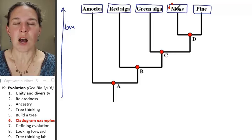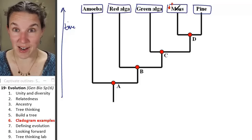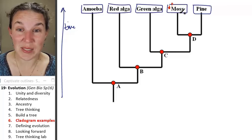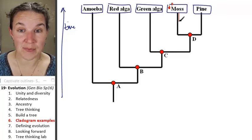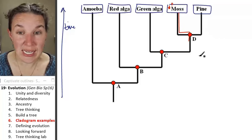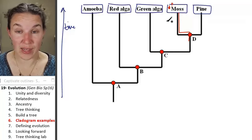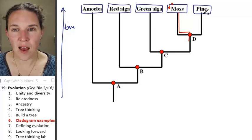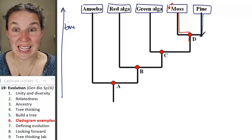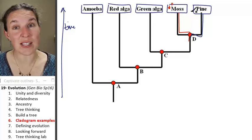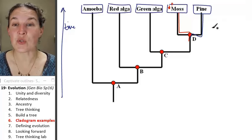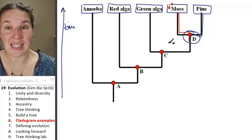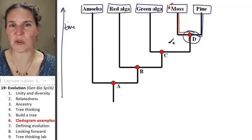And then, now that you pushed pause and you figured it out, I'm going to tell you you're right. Because you're going to trace back the moss, and you're going to see, oh, D is a common ancestor that gave rise to the moss. And oh, D is a common ancestor that also gave rise to the pine. So the most recent common ancestor of the moss and the pine is ancestor D. That's super easy.